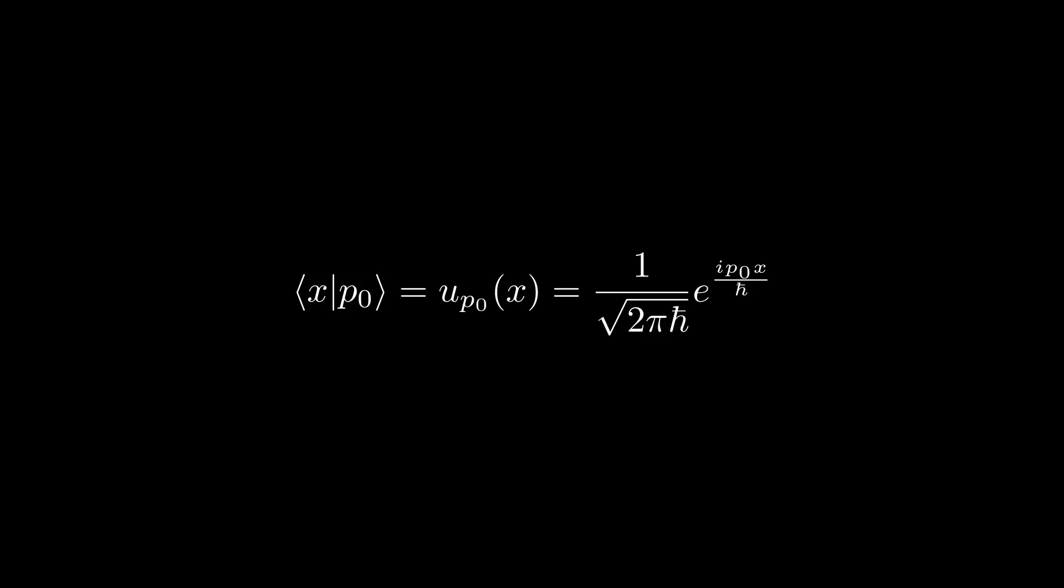Furthermore, notice that this function is actually not normalizable over the entire x-axis, since it does not vanish as we go to plus or minus infinity, meaning that it is not a physically realizable wave function. This effectively shows that if we have a state with defined momentum, it is impossible to define its position, so as not to contradict the Heisenberg uncertainty principle.